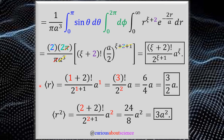For the expectation value of r, we plug in ξ=1: we get (1+2)! = 3! divided by 2^(1+1) = 4, times a¹. Chugging through, we get three-halves a — that is 3/2 times the Bohr radius — the expectation value of the distance at which we'd measure the electron. For r², we just plug in ξ=2, and the same integral setup saves us a lot of time.